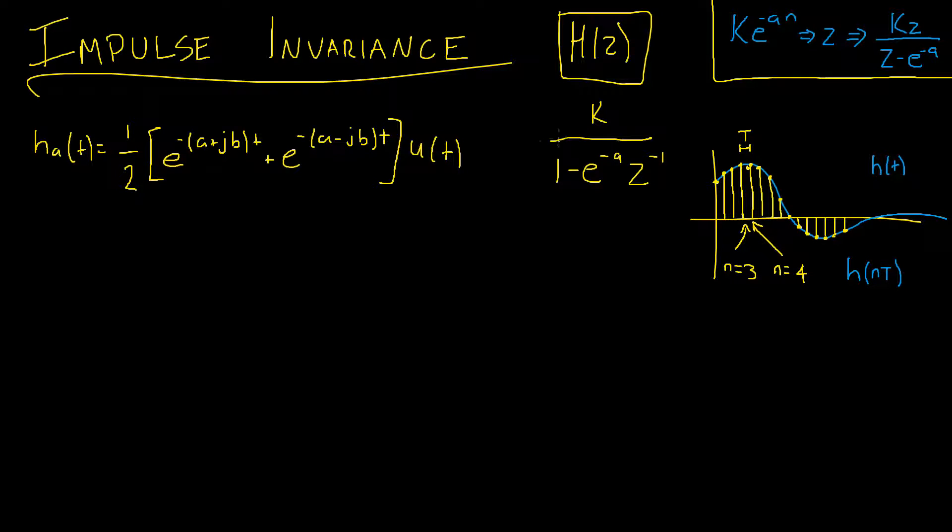Secondly note that this is just a minor variation of the Z transform in the top right hand corner here. I've just divided top and bottom by Z to be able to get this Z to a negative power.